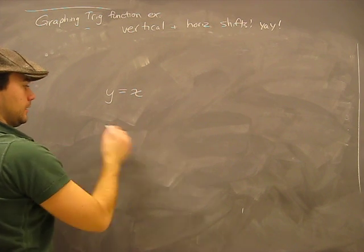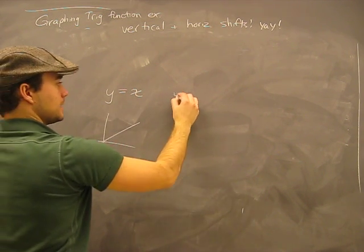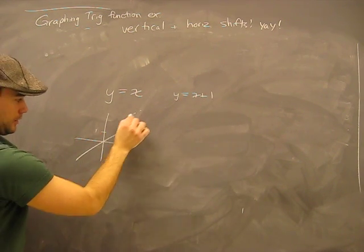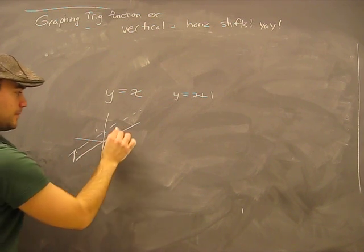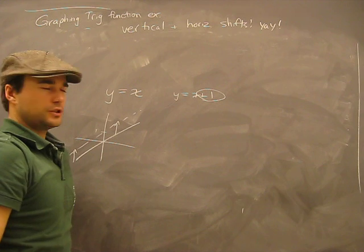Y equals X, quite easy, there you go. Y equals X plus 1 meant we pop up the Y axis one unit and move the line up the whole way. That represented a vertical shift of positive one.